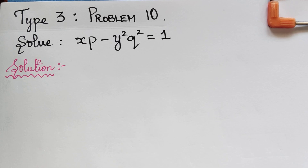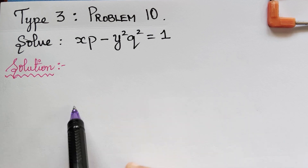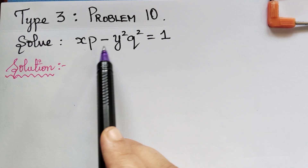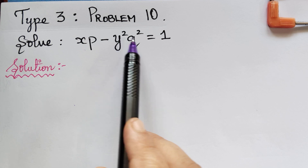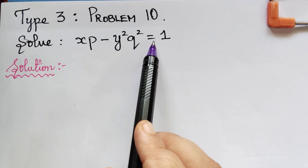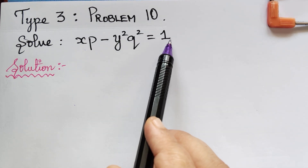Dear students, under the topic non-linear partial differential equations, we are solving a problem under standard type 3. Here we have problem 10, that is xp minus y squared q squared is equal to 1.